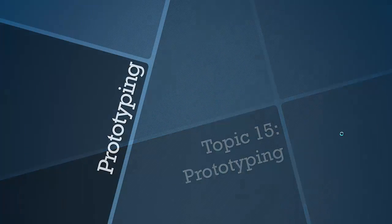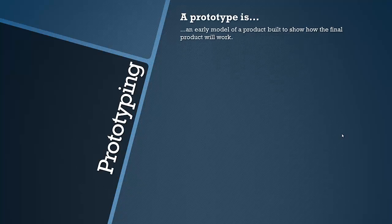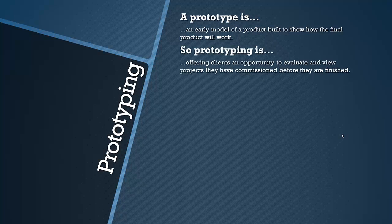Let's have a look at what a prototype is. A prototype is simply an early model of a product built to show how a final product will work. In general, it might be shown to investors or potential customers to show them what it will be like when finished. But in computer science, prototyping is offering clients an opportunity to evaluate and view projects they have commissioned before they have finished — it's usually software or an application being developed for clients.